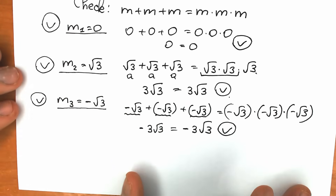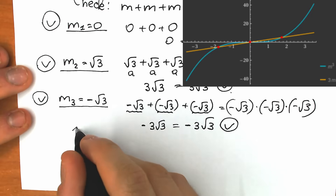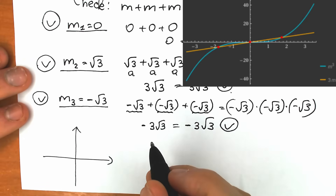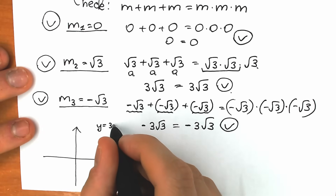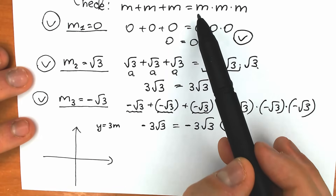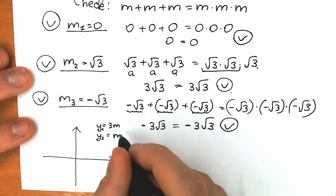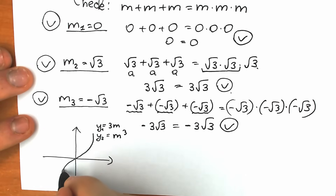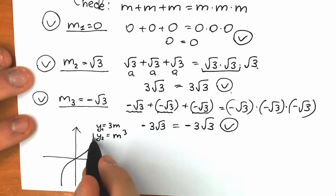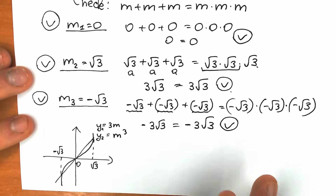A few notes: we can also graph this. The left side gives the linear function y = 3m, and the right side gives the cubic function y = m cubed. Sketching both, the cubic and the linear intersect at three points: minus √3, zero, and √3 — confirming our three solutions.